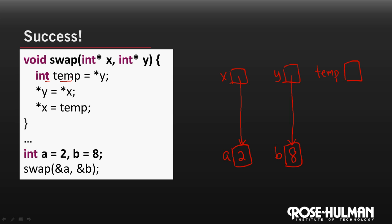Temp is an integer. And its value is the value that's pointed to by y. Remember that the star in an expression means that we dereference y or get the value to which it points. In this case, the 8. On the next line, we say that the thing pointed to by y gets the thing pointed to by x, which is the 2. And finally, the thing pointed to by x gets the temp value, which is 8.